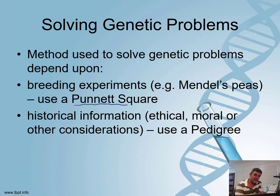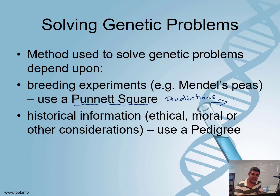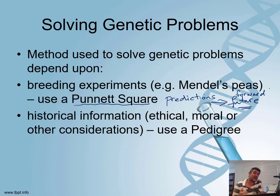We've already used Punnett Squares and the main reason we use them is for making predictions — they look forward into the future. We look at our parents, the particular trait we're after, how these parents would combine, what gametes they might produce, and therefore what are the likelihoods of various combinations being produced. Punnett Squares are fantastic for solving genetic problems based on breeding experiments, such as the ones Mendel was involved in.